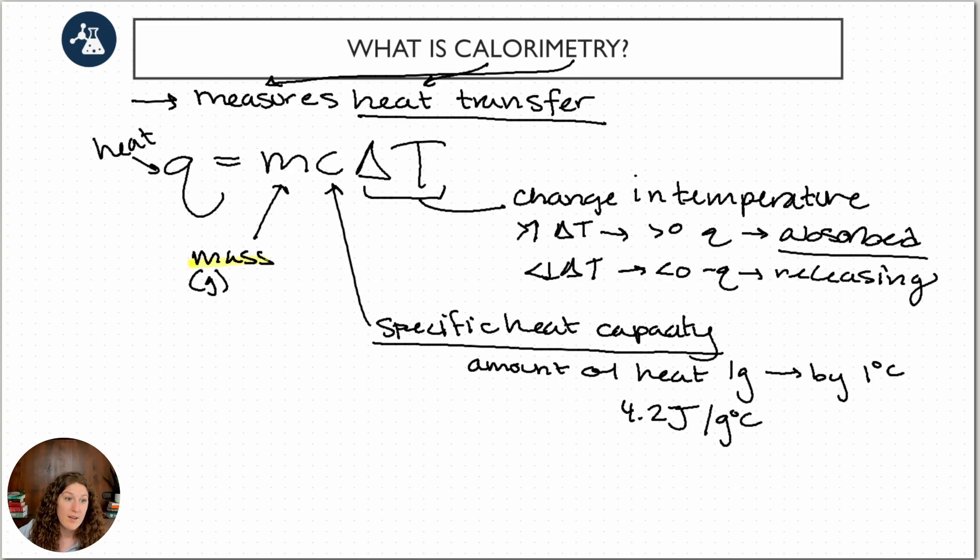So here's the three relationships. We have our mass of our sample, we have our specific heat capacity of our sample, and we have our change in temperature, which usually defines the sign value of our heat. If it's negative, that means we're releasing heat, and if it's positive, that means we're absorbing heat.